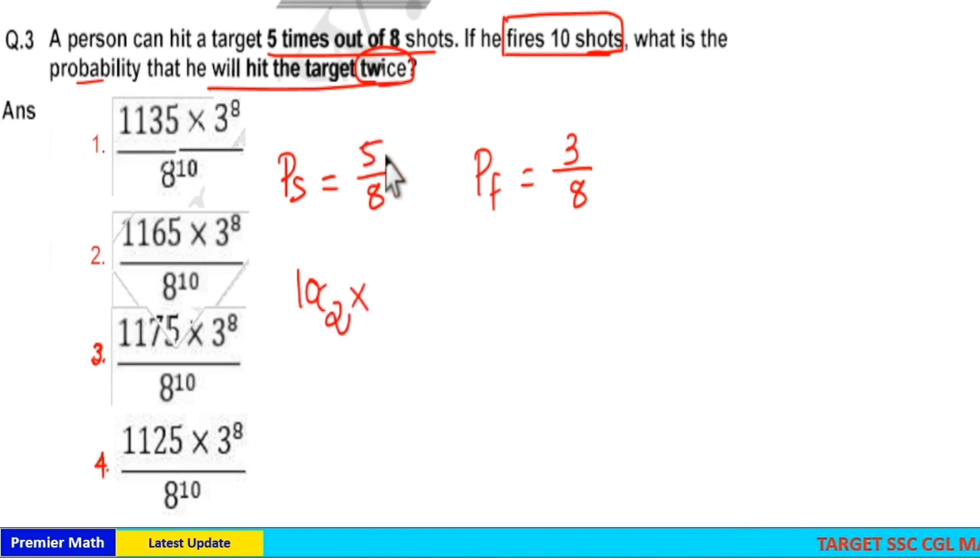Now here probability of success is 5 by 8. So when you hit the target once, probability of success is 5 by 8. But when you hit the target twice, probability of success is 5 by 8 the whole square.